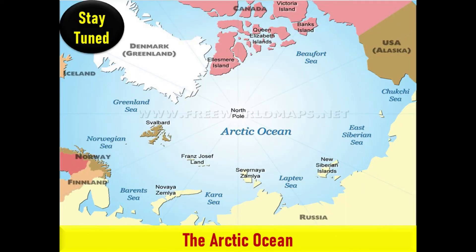The Arctic Ocean is in the northern part of the Earth, primarily around the North Pole. It is the smallest and shallowest of the world's oceans. A lot of fresh water enters the Arctic from melting ice, and for a good part of the year much of the Arctic is covered in ice. It is also known as the coldest of all the oceans. The International Hydrographic Organization recognizes it as an ocean, although some oceanographers call it the Arctic Mediterranean Sea. It is sometimes classified as an estuary of the Atlantic Ocean, and is also seen as the northernmost part of the all-encompassing world ocean.